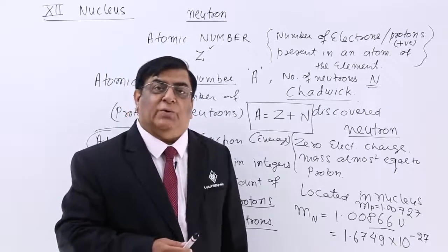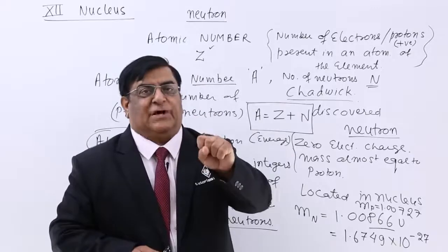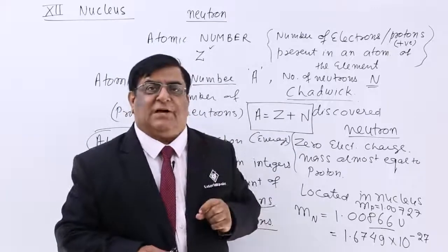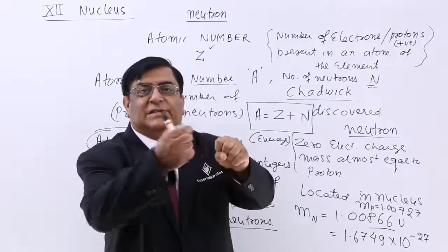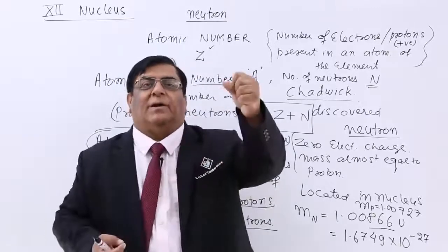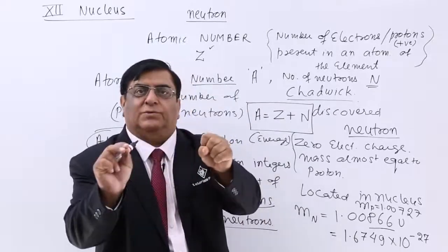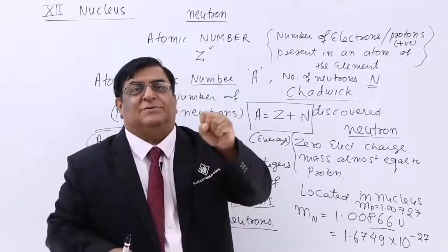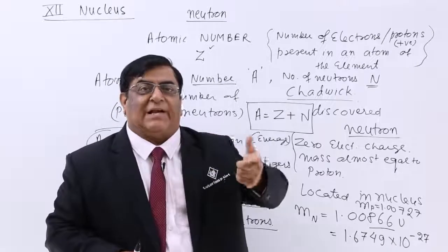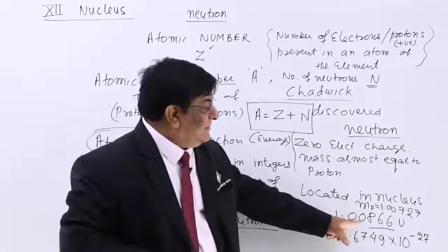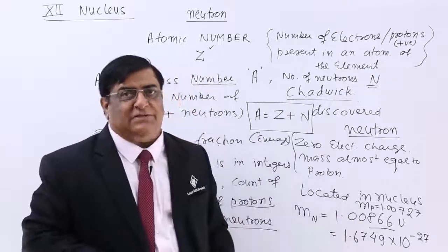How does this happen? Because we know that anything which is positively charged — how is it made positively charged? When one electron is taken out, it becomes positively charged. So some material goes out and then it is positively charged. So a positively charged particle is always lighter than a zero charge particle.